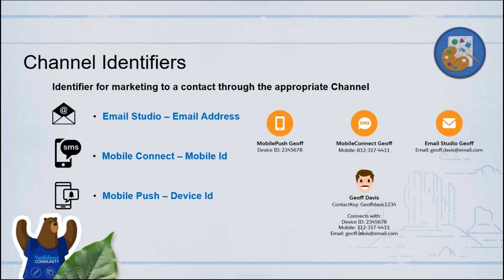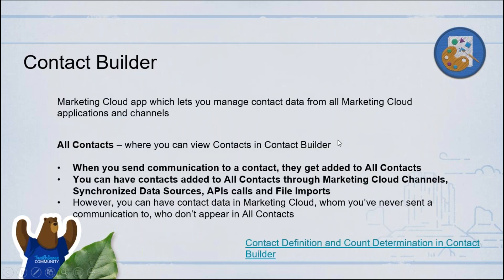Contact Builder is the app in SFMC where you get to see and manage contacts. You will see a section called All Contacts where you can see all contacts and their related channels. Not all contacts stored in SFMC may be visible in All Contacts. You can add contacts to each respective channel like email, Mobile Connect, or Mobile Push, and they get added to the All Contacts list. Anytime you send a communication to a contact from Marketing Cloud, they will get added to the All Contacts list as well, if they're not already there.